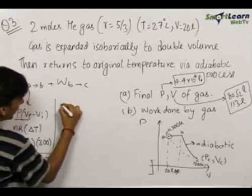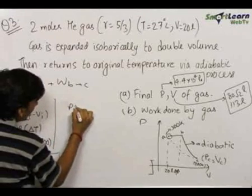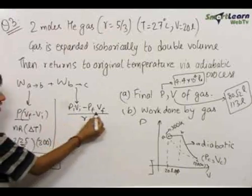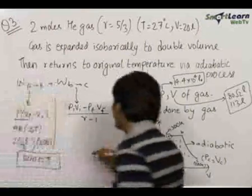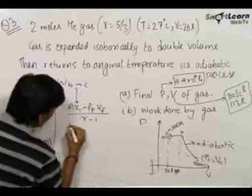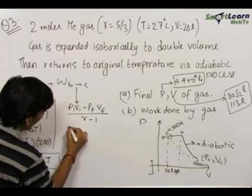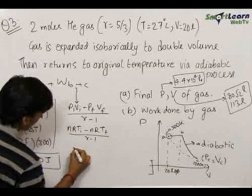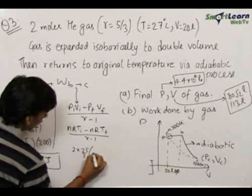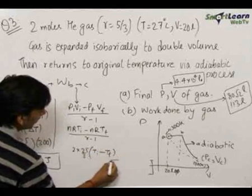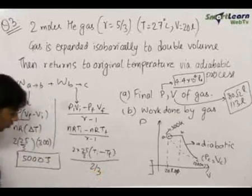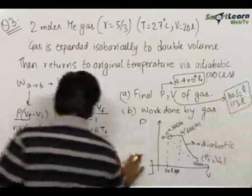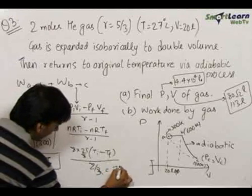B to C is an adiabatic process. For an adiabatic process, work done equals (P_initial × V_initial − P_final × V_final) / (γ − 1), which can be written as NR×(T_initial − T_final) / (γ − 1). This equals 2 × (25/3) × (600 − 300) / (2/3) = 7500 joules.